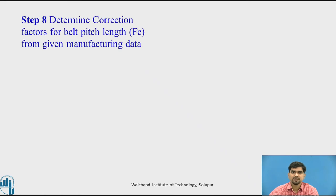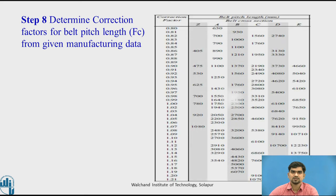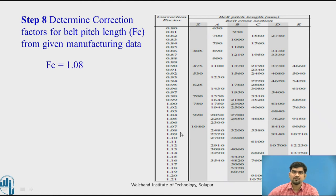Step 8: determine the correction factor for belt pitch length, indicated by the letter Fc. From the manufacturing catalog, for the B section belt with standard pitch length 3200, we select the value of Fc. We are getting Fc equal to 1.08 for the standard pitch length 3200.